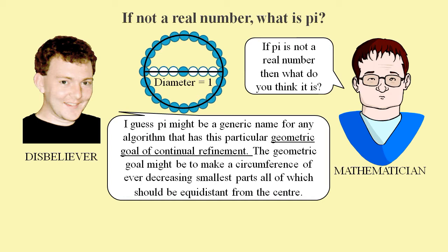So pi cannot be a fixed length because such a thing cannot exist in the real world. So we might use the word pi to refer to any sequence generating algorithm with this particular geometric goal.